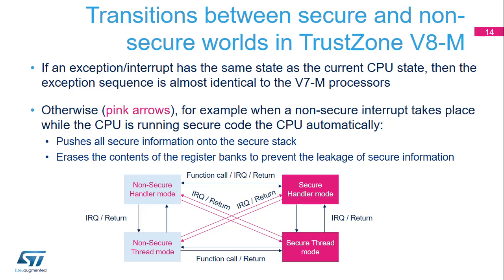The slide represents all possible transitions between the four possible processor states. The eight transitions in the middle of the figure cause a change of the security state. Function calls and returns can be used when the privileged state remains the same, for instance from non-secure thread mode to secure thread mode; otherwise an interrupt entry and return is required.